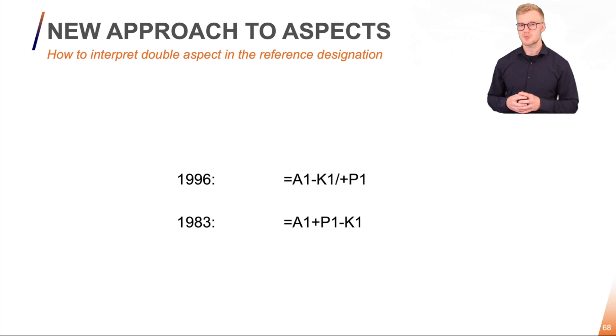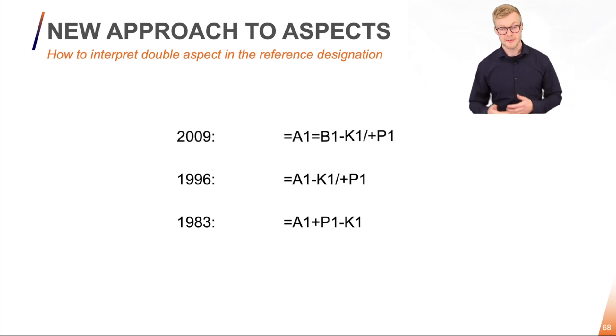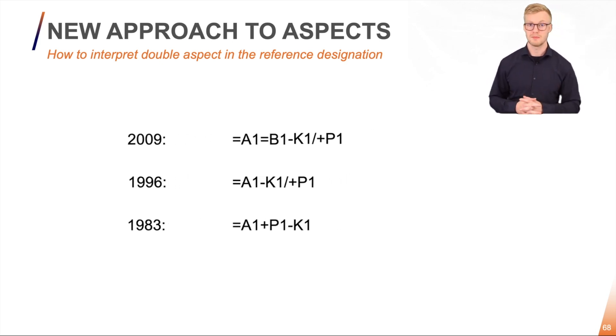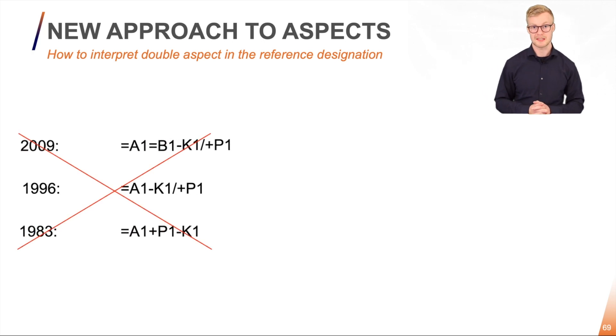However, people found out that this was not really stable. If we move our component, suddenly the complete reference designation will change. So we need to actually divide the reference designation so the location is not part of it. And that's the same kind of idea which has stuck with RDS also up until 2009. We do not recommend to mix aspects into one reference designation.